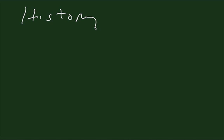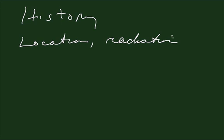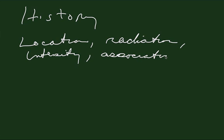The evaluation of chronic pelvic pain includes taking a good history, denoting the location, radiation, intensity, and associations — things that have caused the pain to occur. We also want to know the timing of the pain and the quality of the pain.